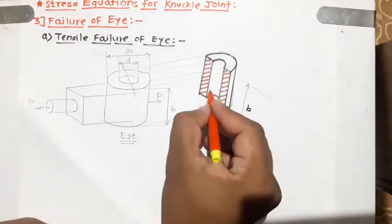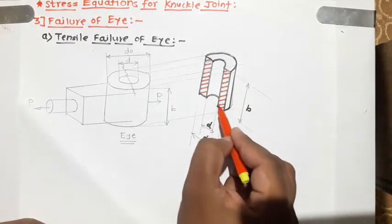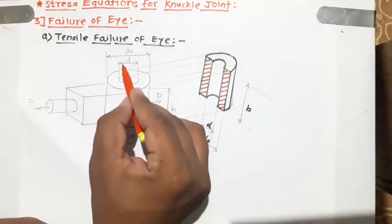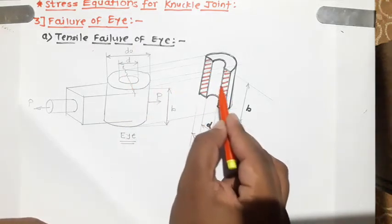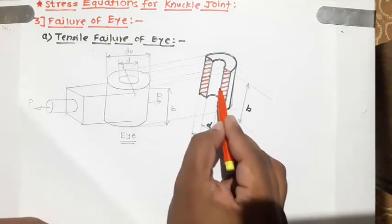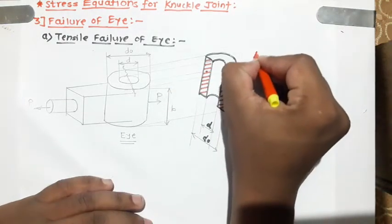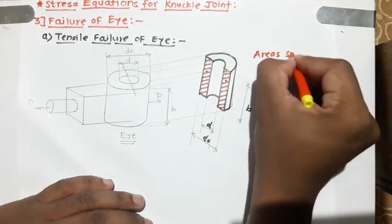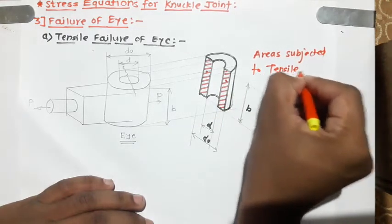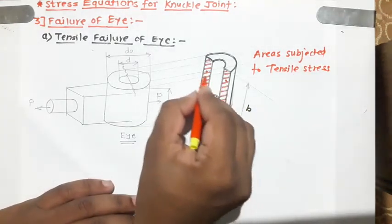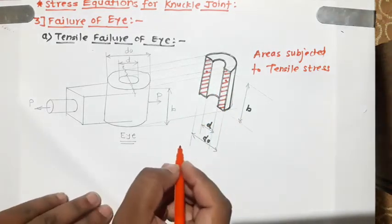After tensile failure, the I-end will look like this. The hatched portion represents the area subjected to tensile stress, because the I-end fails at the weaker section. After failure, the two rectangular areas visible are the areas subjected to tensile stress, and we must consider both these areas when finding the tensile stress equation.